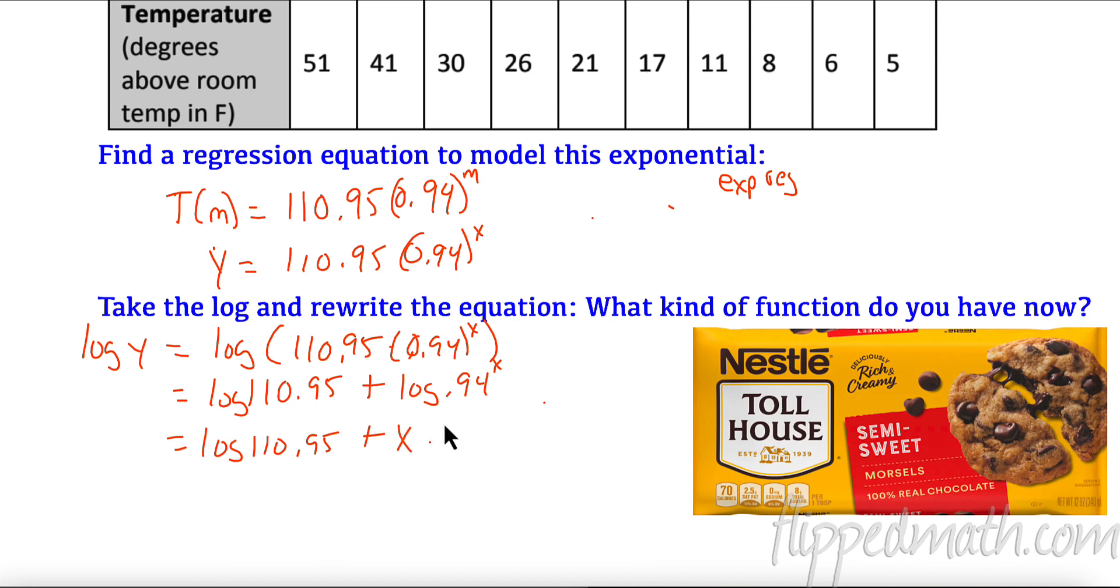That's log of 110.95. My power rule is I'm going to put that in the front, so that's really x times log of 0.94. This is just a number, so what is the log of 110.95? That is about 2.05. This is also just a number. The log of 0.94 is about negative 0.03, so I'm going to look at minus 0.03x. So when I took the log of y, which took the log of the whole equation, what kind of function did I have now? I have a y equals mx plus b. I have a linear right here.